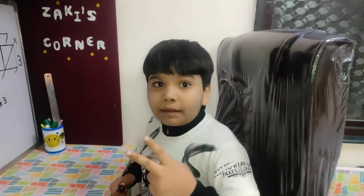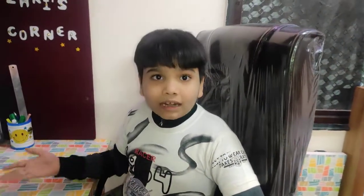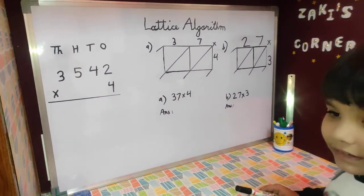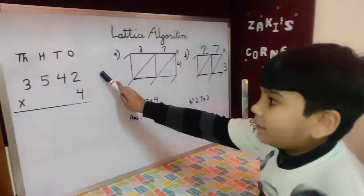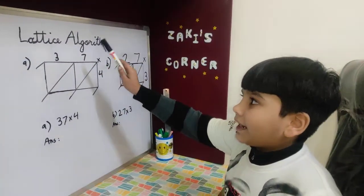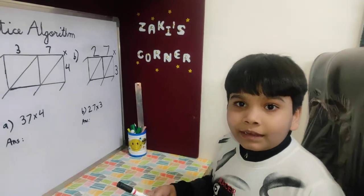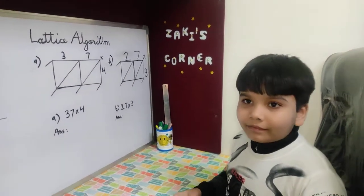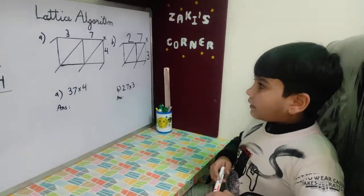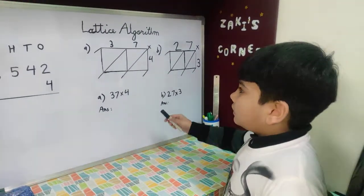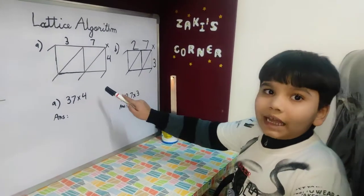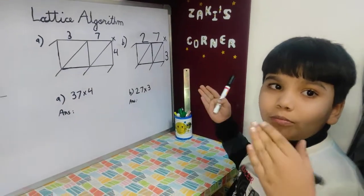There are two ways to multiply numbers. Number one: the standard algorithm, which is very common — the way we always use. But today, we are going to learn how to multiply numbers using the lattice algorithm. Isn't this exciting, friends? Don't worry, it will be very easy for you. It is also very common, and I also have some examples that will help you understand more clearly.